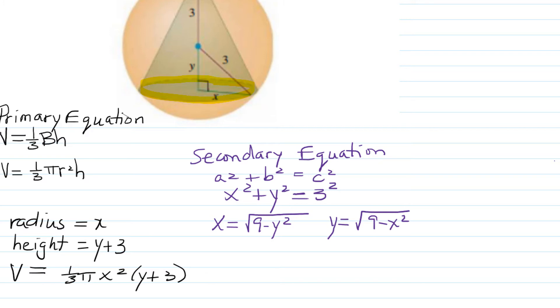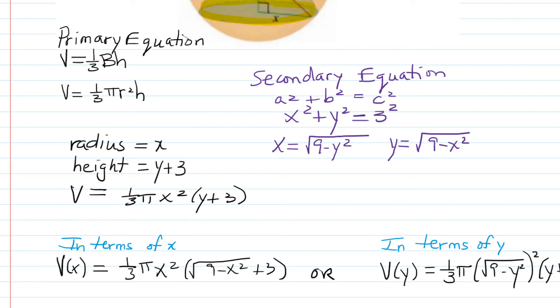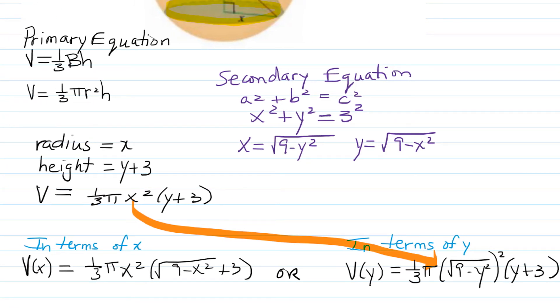Now which one you decide to do is up to you, but let's observe: if we solve for y in terms of x to get a volume function in terms of x, we would replace y with √(9-x²). On the other hand, if we write x in terms of y, we would replace x with √(9-y²). Which function looks easier to work with?